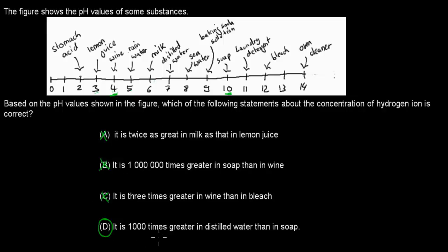D is correct. Distilled water is at pH 7 and soap is at pH 10. Each pH unit increase represents a 10-fold increase in concentration. From 7 to 8 is 10×, from 7 to 9 is 100×, from 7 to 10 is 1,000×. So D is correct — the hydrogen ion concentration is 1,000 times greater in distilled water than in soap.